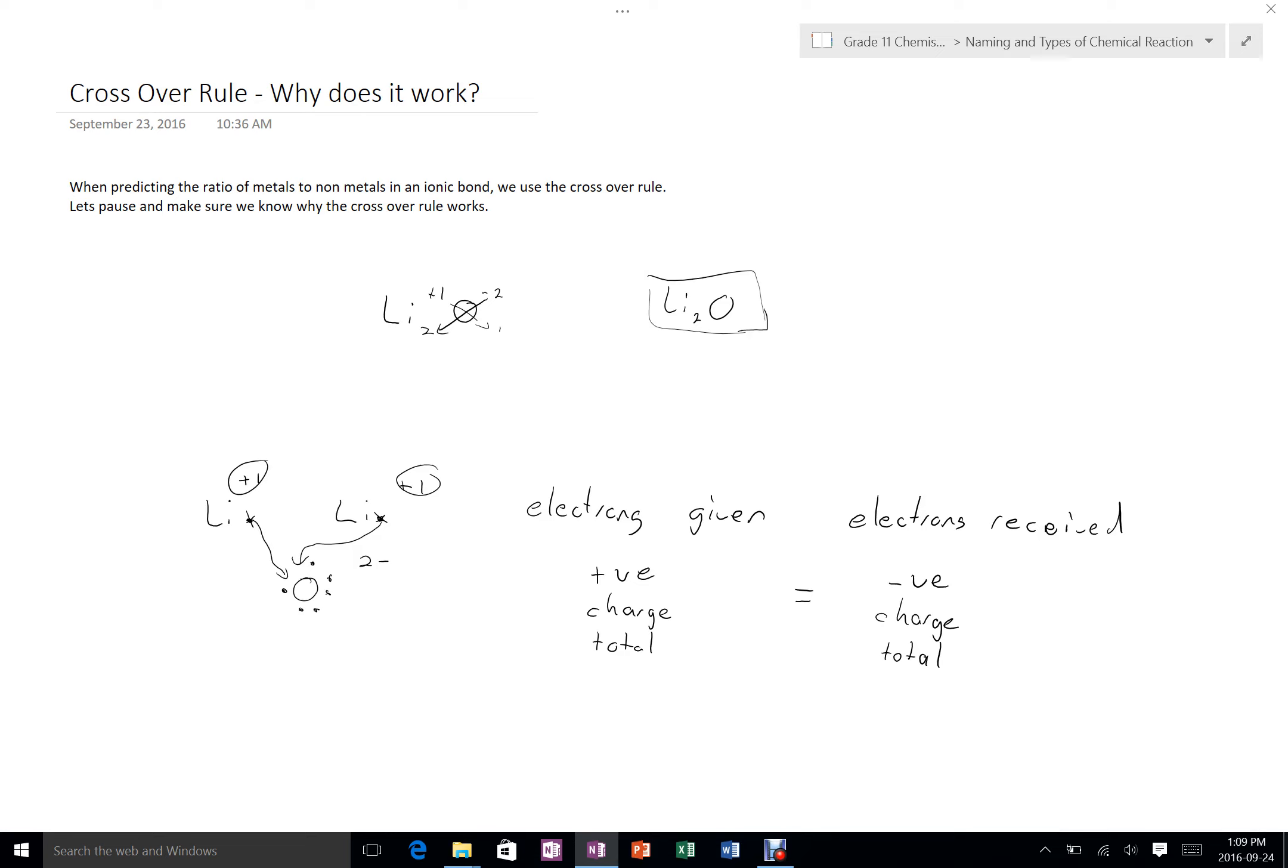But practically here, since the amount of positive and the amount of negative, the amount of electrons given up and the amount of electrons received is the same, the total charge, the plus and the minus together, should go to zero. And as a result, a neutral crystal or a stable crystal.